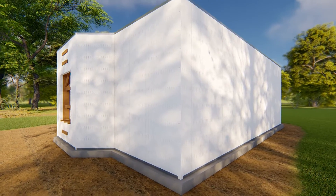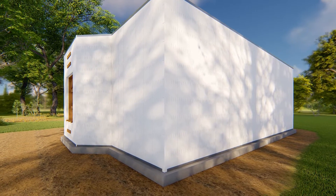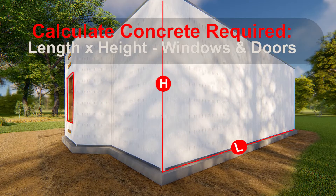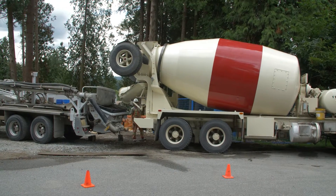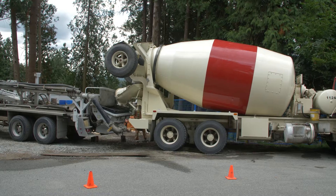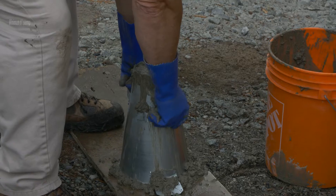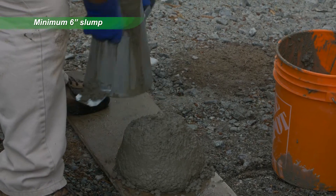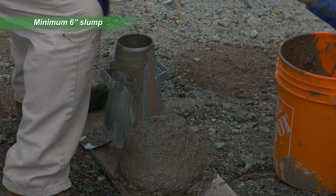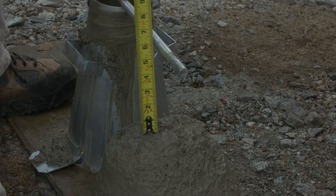Calculate concrete usage on your project by multiplying the length times height of your ICF walls, then deducting window and door areas. Apply standard coverage factors for your wall cavity width. Contact the ready mix supplier and request an ICF mix with the minimum 6-inch slump and compressive strength according to the specifications for your plan.